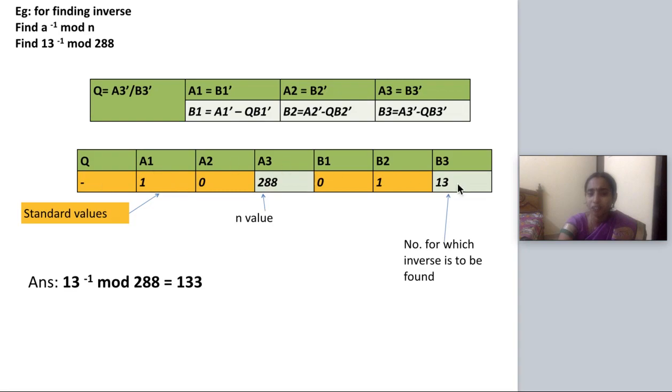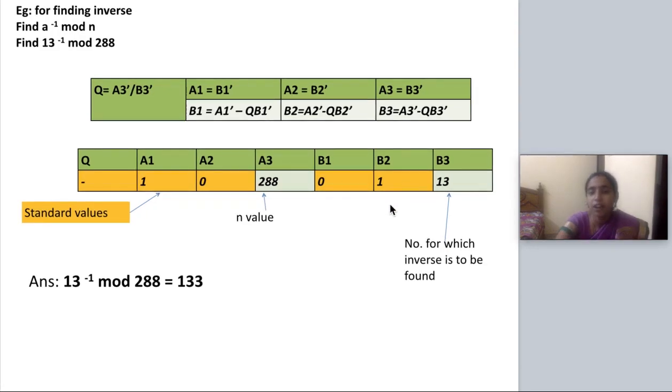Before that, the first row is a standard row. Q will not be having any value. A1 and A2 will be having 1 and 0. B1, B2 will be having 0 and 1. So 1, 0, 0, 1 is a constant standard value. The n value should be placed in A3. So this is the first step.